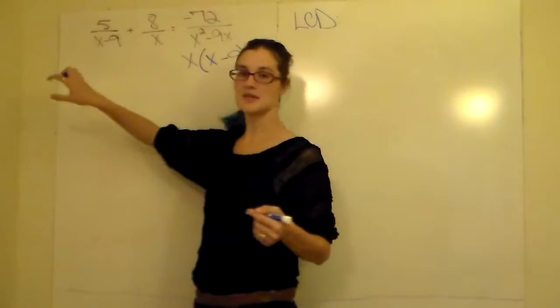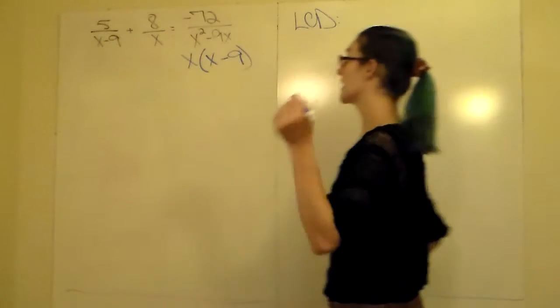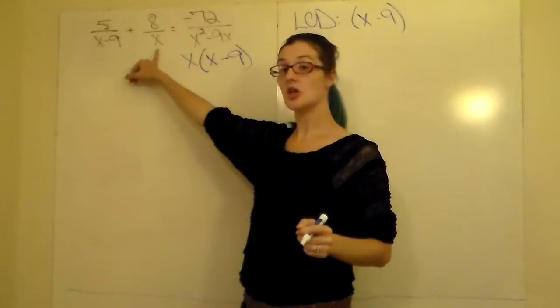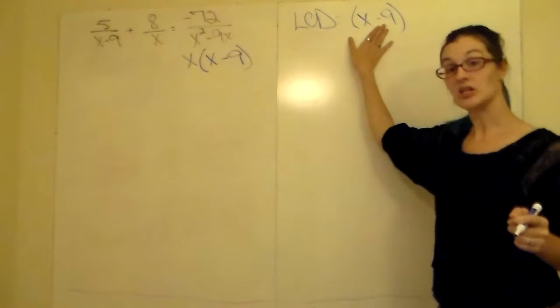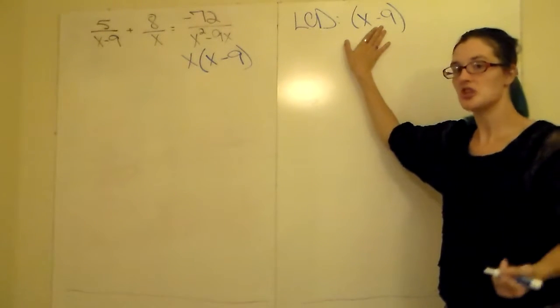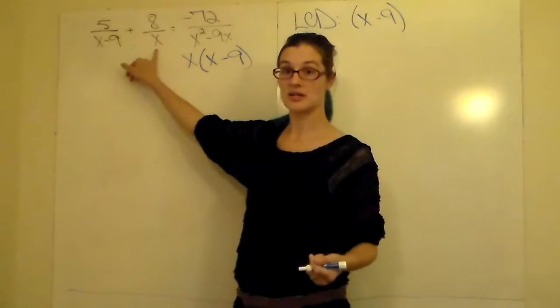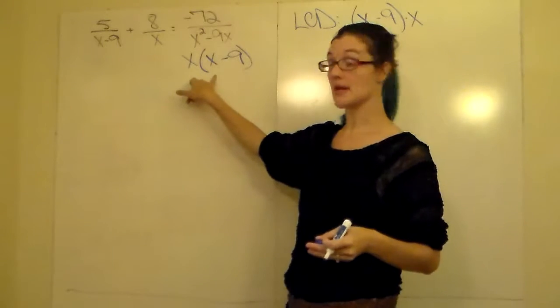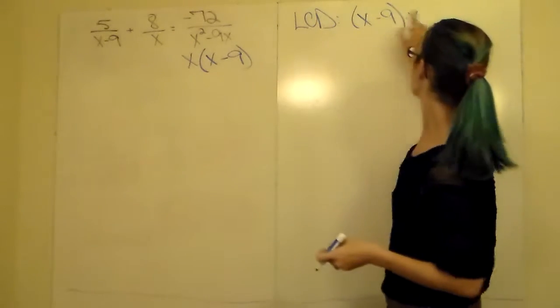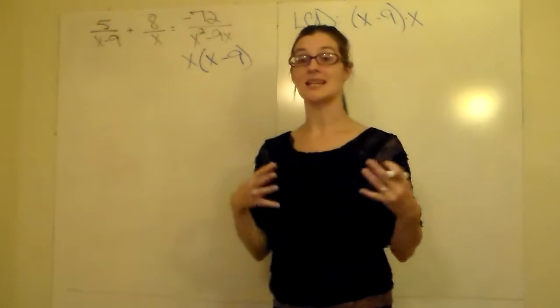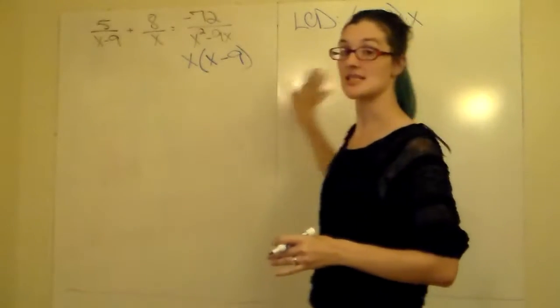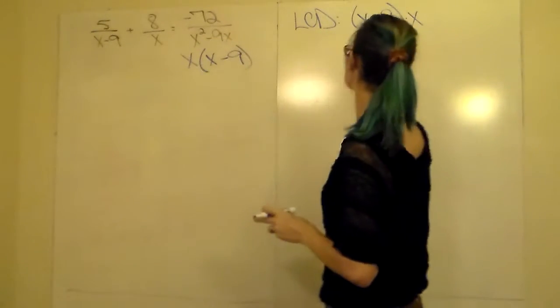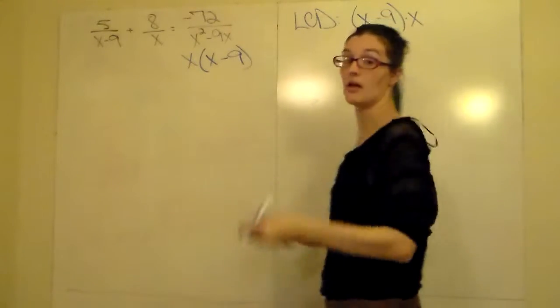So for your LCD, same thing as before when we were adding or subtracting. Take your first denominator, put it in parentheses if it's a binomial: x minus 9. Then we're looking and saying we need an x, stand alone, all by itself. x minus 9 includes an x, but it's something extra. It's not just an x. This is like the deluxe model, and we need the standard model as well. So we're going to multiply x as well. Then we need this denominator. It has both an x and an x minus 9 in it. We already have the x, we already have the x minus 9. I don't need to add anything extra into it. My LCD should contain every single denominator.